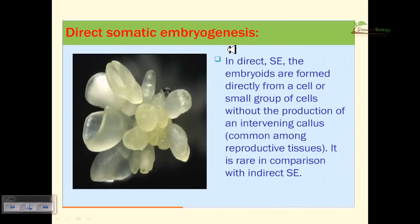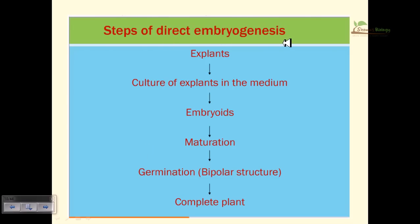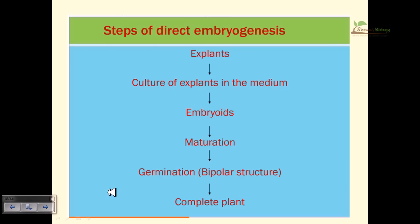In direct somatic embryogenesis, embryos are formed directly from a cell or small group of cells without producing any intervening callus. This is rare compared to indirect somatic embryogenesis. From the explant, a mass of cells is cultured and since these cells are destined to produce embryos, they directly form embryos without callus formation. After maturation, with all necessary ingredients supplied, germination occurs and the complete plant is obtained.